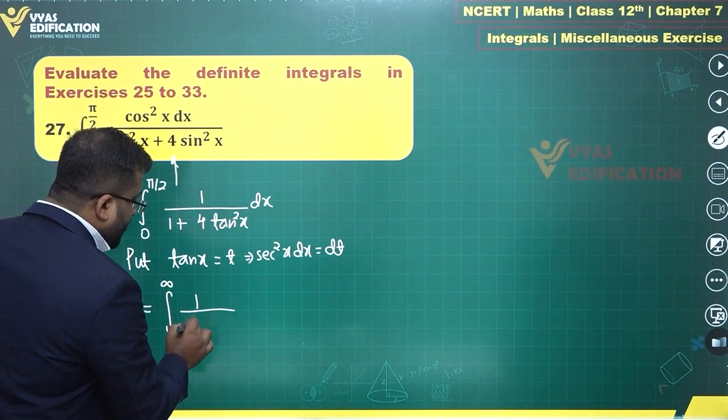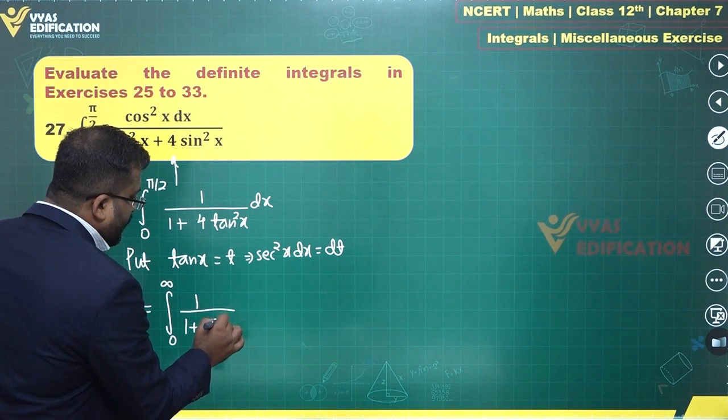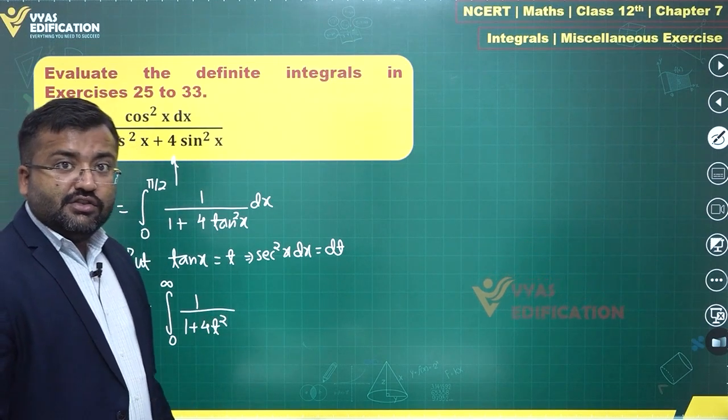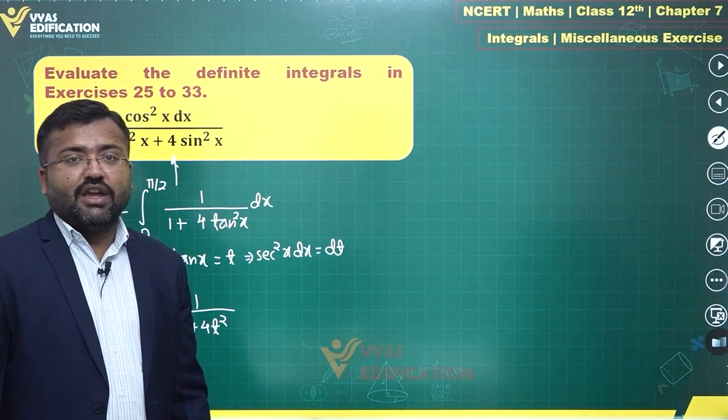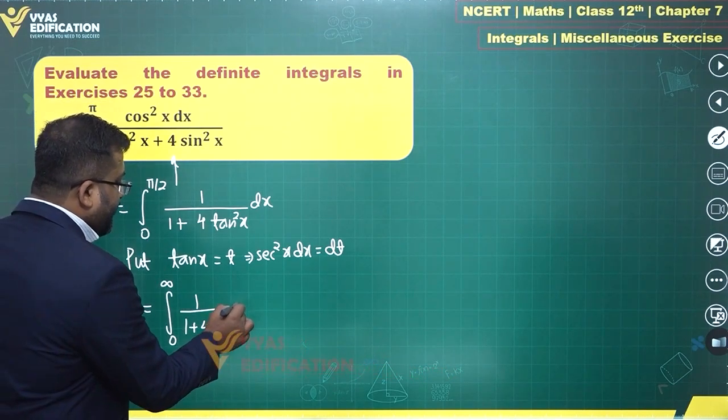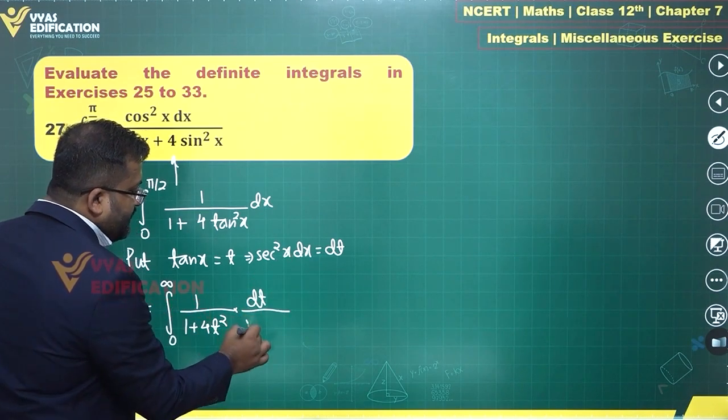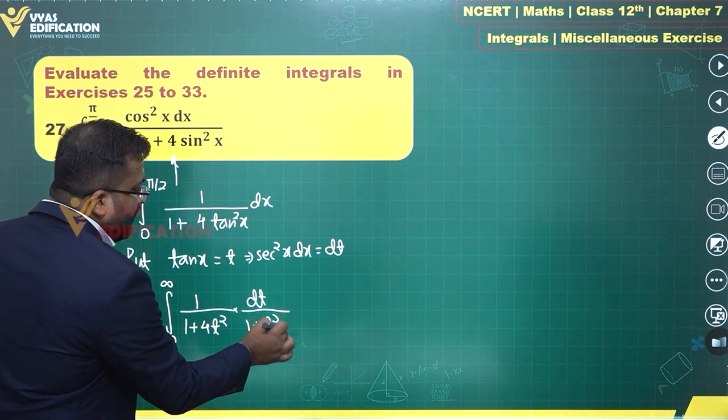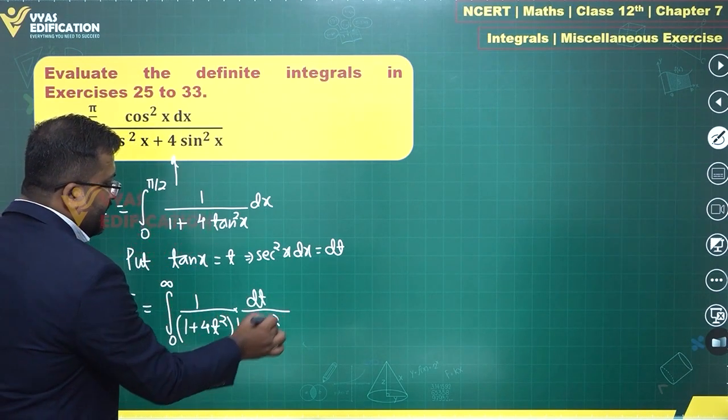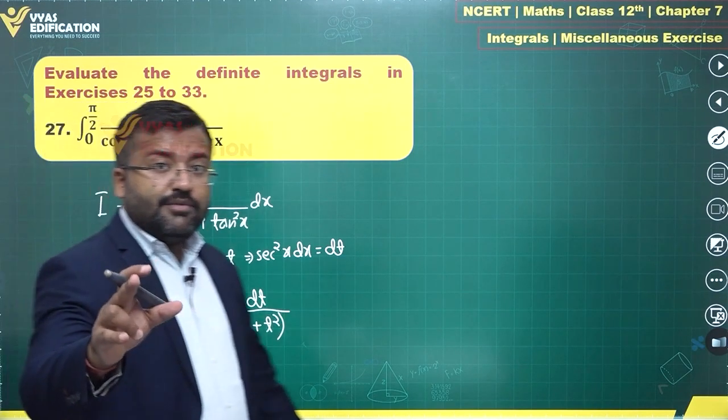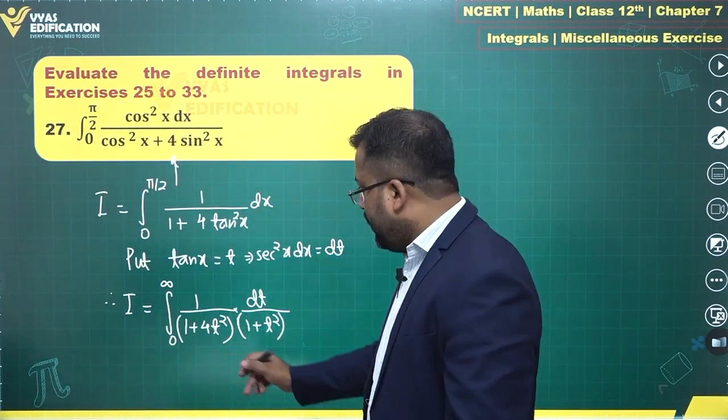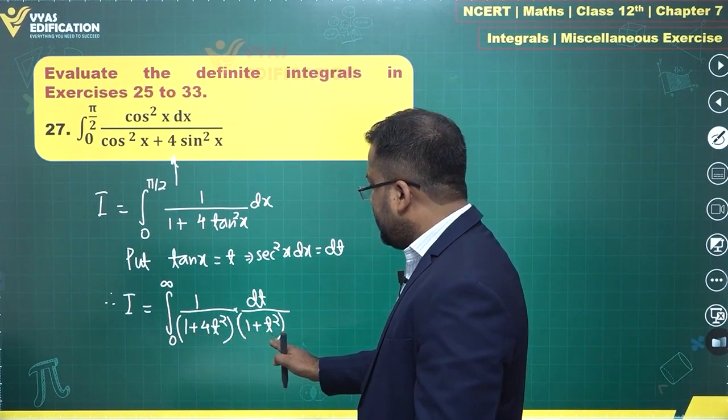This becomes 1/(1+4t²). Since this is a miscellaneous wave, we are seeing these kind of things. Let it be. What next? dx is dt/(sec²x), which is 1+tan²x, equals 1+t². This is what you get in the denominator. Now if you observe this expression carefully, what do you see? 1+4t² and 1+t².